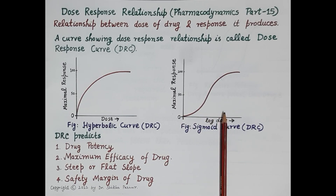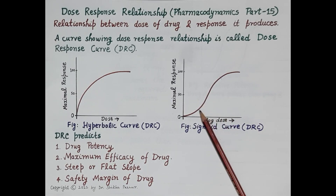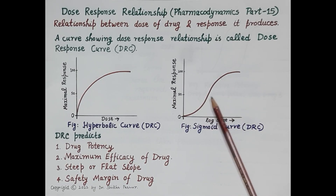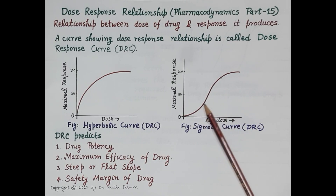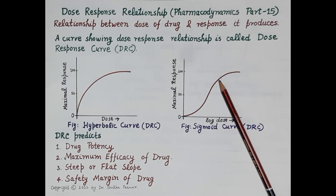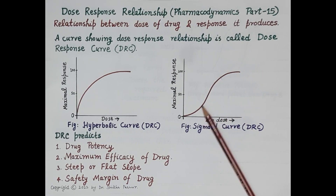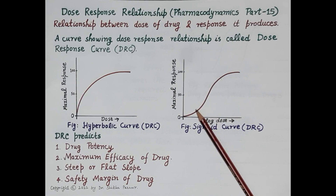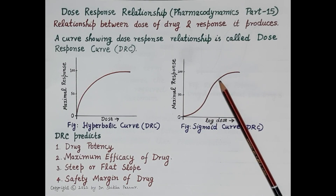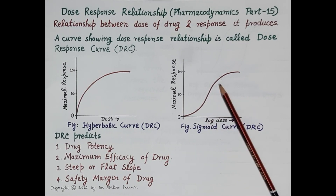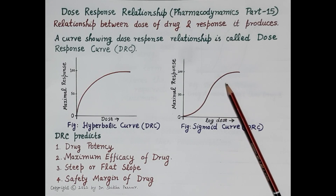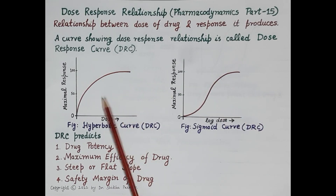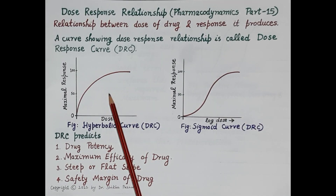This sigmoid curve is preferred because a linear relationship is seen in the intermediate zone of the curve. This linear region constitutes around 30 to 70 percent of the responses, so the sigmoid curve is easy to read and analyze compared to the hyperbolic curve.